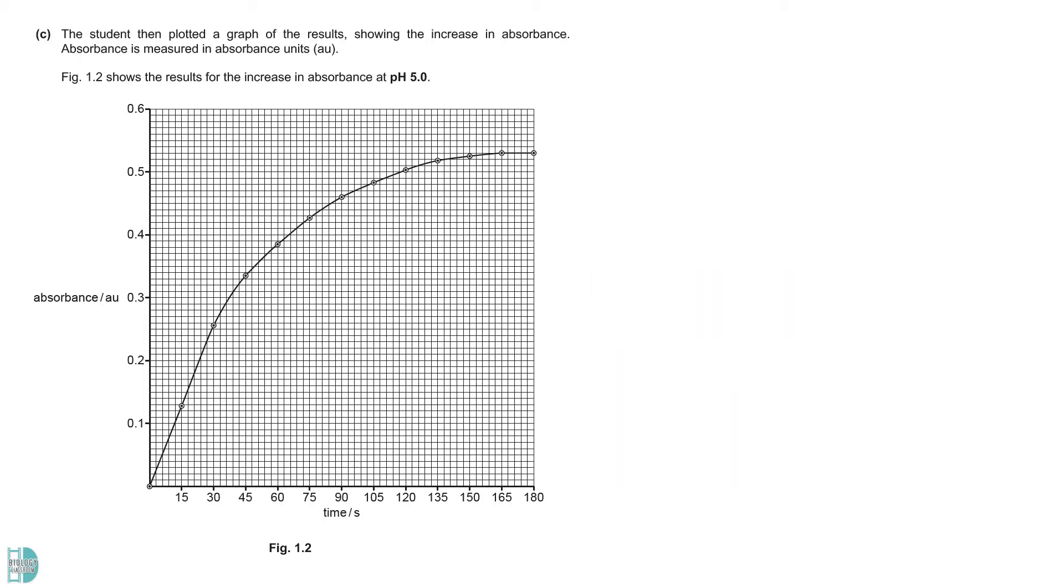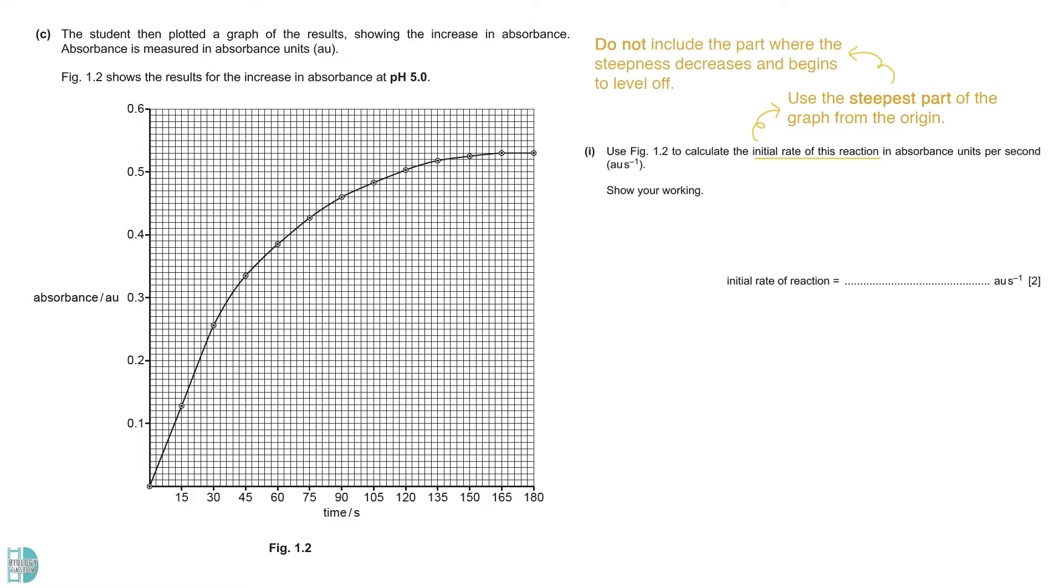C shows the result at pH 5.0. Part 1 wants you to calculate the initial rate of reaction. The initial rate of reaction is calculated using the steepest part of the graph from the origin. You should not include the part where the graph starts to increase less steeply and begins to level off. So, in our case, we should not take anything beyond 30 seconds. You should draw a tangent from the origin up to 30 seconds. Then, the rate can be calculated by dividing y by x.